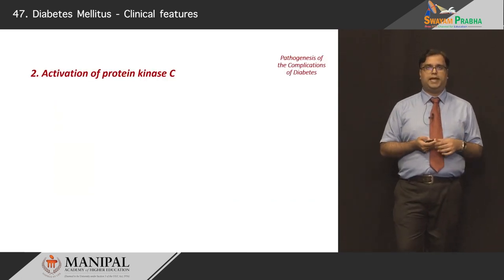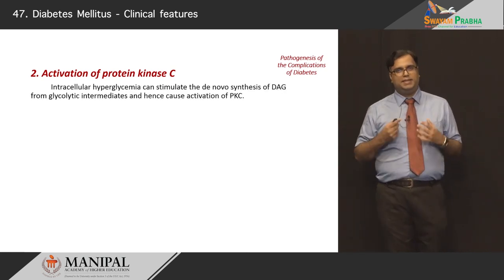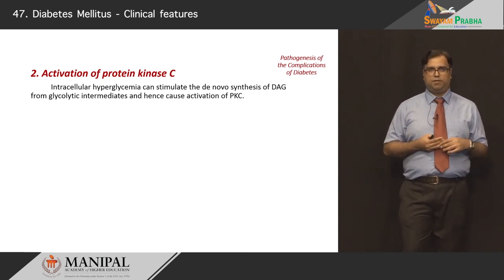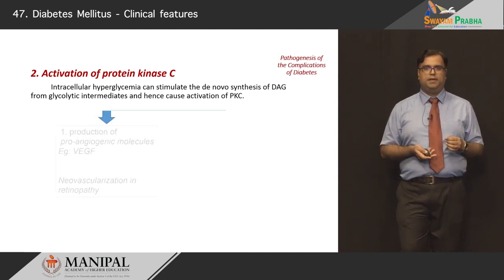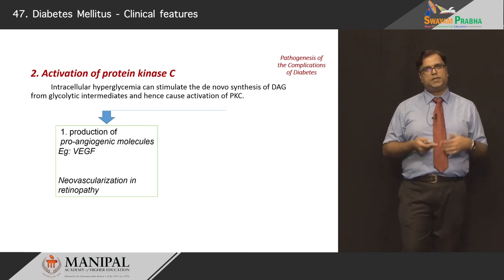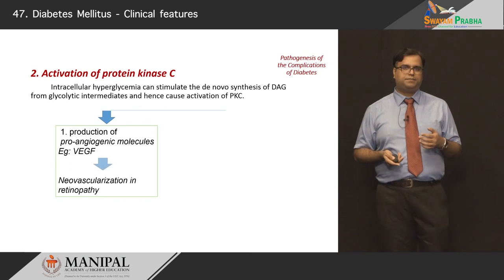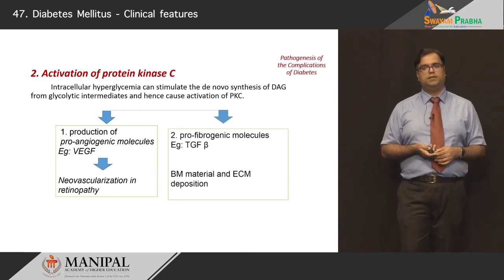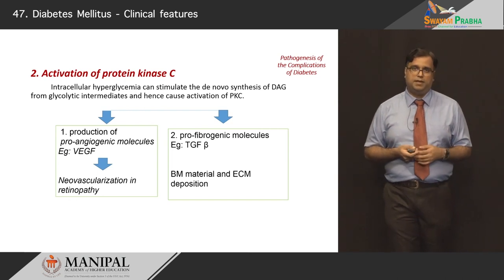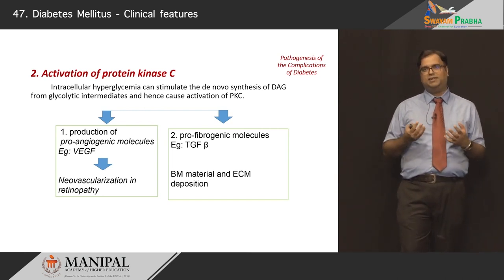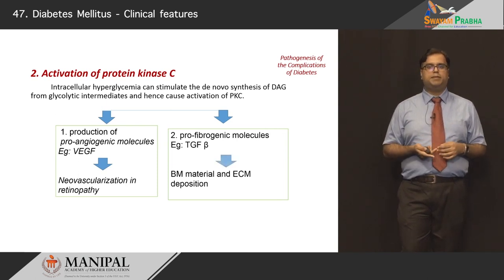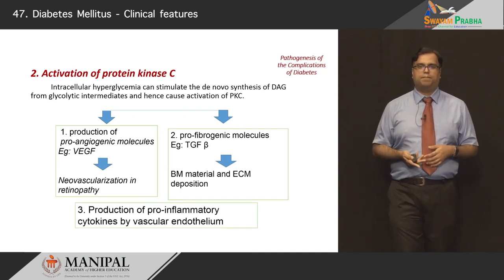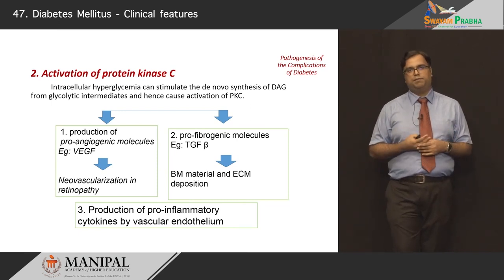The second event in the complication is activation of protein kinase C. When there is increased glucose within the cell, it stimulates de novo synthesis of DAG from glycolytic intermediates, causing activation of protein kinase C. This produces more pro-angiogenic products — vascular endothelial growth factor (VEGF) — which brings about new blood vessels, particularly in the retina, causing diabetic retinopathy. Pro-fibrogenic molecules such as transforming growth factor beta are also activated, causing basement membrane material deposition and extracellular matrix thickening — sclerosis within your glomeruli — and production of pro-inflammatory cytokines within the endothelium of vessels.